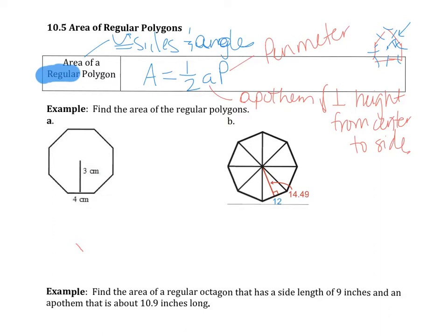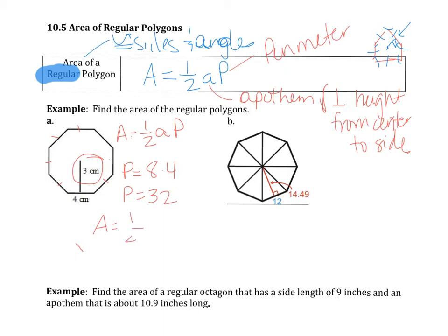Alright, we're going to find the area of these regular polygons. So, area equals one-half the apothem times the perimeter. First thing I'm going to do is find the perimeter. This is an eight-sided figure, so eight times four — the perimeter is 32. Using the formula, area equals one-half the apothem times 32. Area equals 48, and since we're talking area, that's centimeters squared.